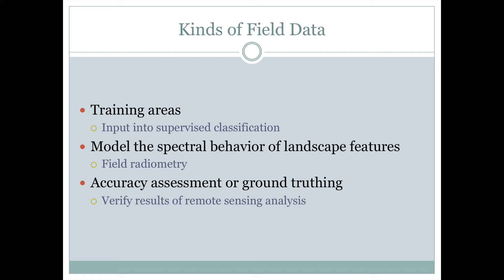Another place field data is important is when we're trying to model the spectral behavior of landscape features, such as certain types of plants or other features. One way we can do this is to go out in the field with an instrument similar to the sensors on the satellite and see how measurements of certain bands of the electromagnetic spectrum compare field measurements to the actual measurements from the satellite. This process is called field radiometry.